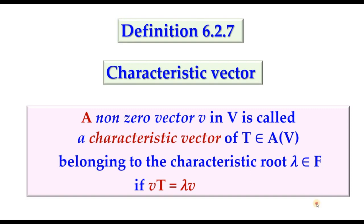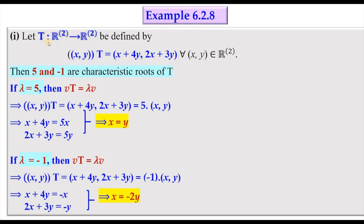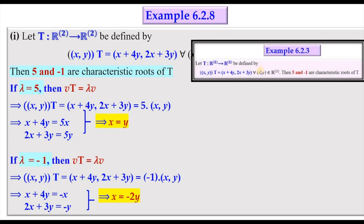Consider T from R² to R², defined in the way we had already when we talked about characteristic roots. Both 5 and -1 are characteristic roots of T. Now we try to find characteristic vectors belonging to 5 and characteristic vectors belonging to -1.